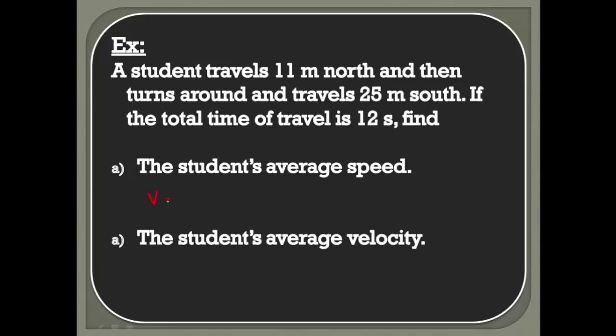Speed is v equals d over t. What is our distance? That's just the addition of the two values: 11 meters plus 25 meters, divided by 12 seconds. You get a value of 3 meters per second. We should have speed or velocity in terms of meters per second.